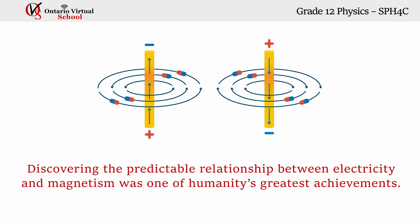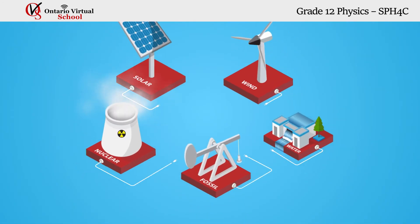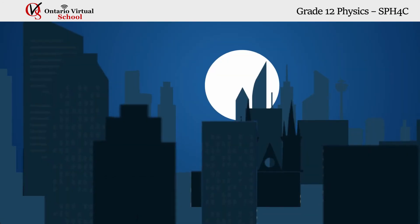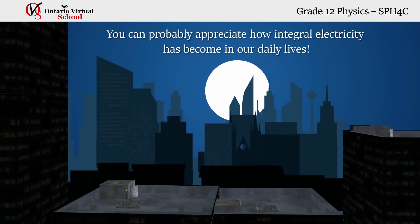Electricity and Magnetism: Discovering the predictable relationship between electricity and magnetism was one of humanity's greatest achievements. That discovery allowed us to generate electricity, and if you've ever experienced a blackout, you can probably appreciate how integral electricity has become in our daily lives.